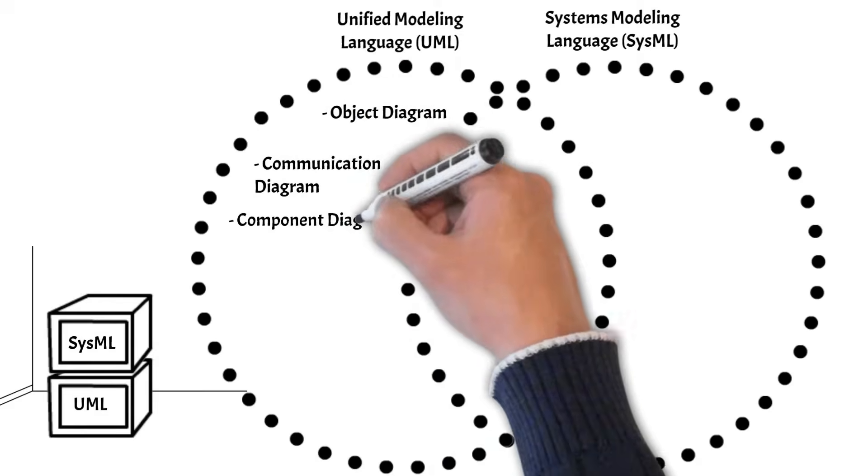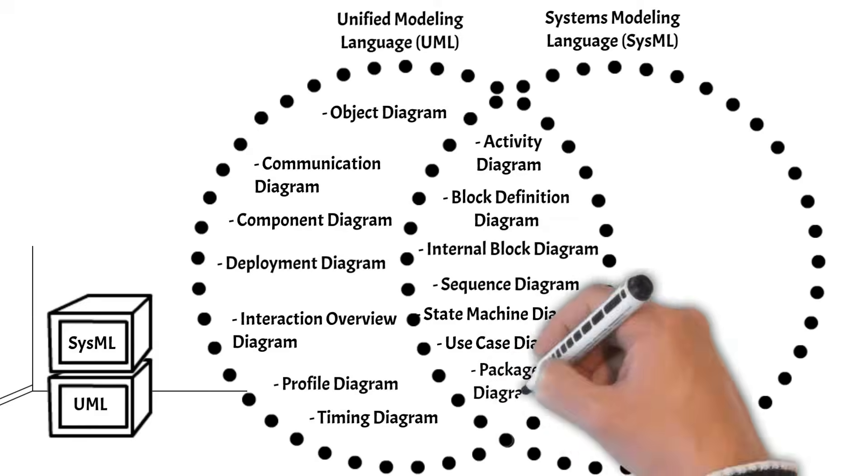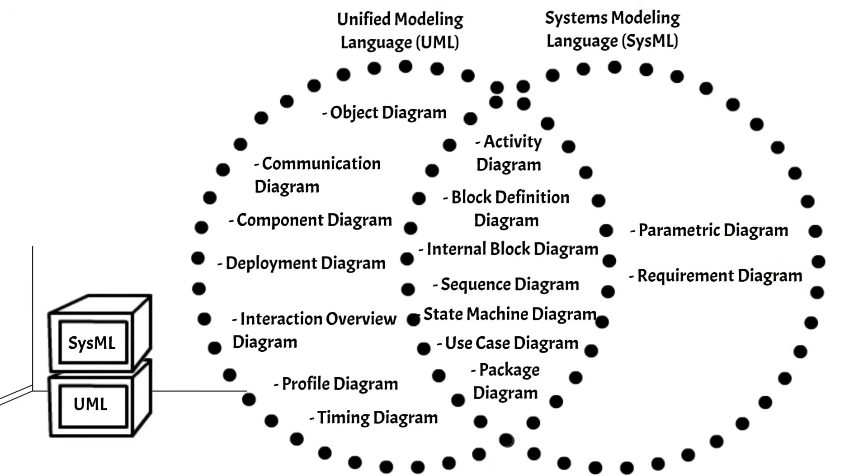SysML took the already existing UML metamodel as a foundation and added capabilities. It can be seen in the Venn diagram that UML and SysML share some, but not all, diagram types.